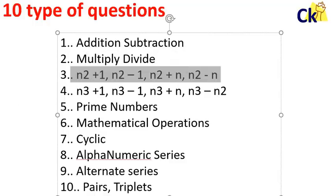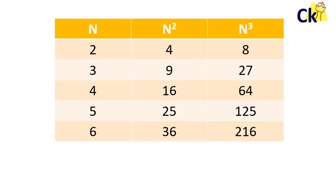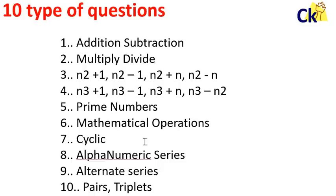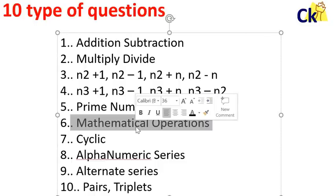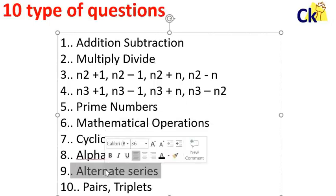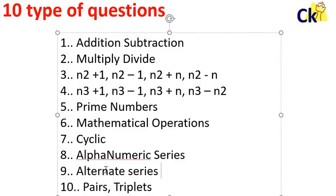So the moment you compare this, you have to have an idea. Let me give you a question we can solve via this. Square cubes, prime numbers, mathematical operations, sum of the two terms, cyclic, alphanumeric series, alternate series. Like 1st, 3rd, 5th term is separate. 2nd, 4th, 6th is separate. And then pairs, triplets.